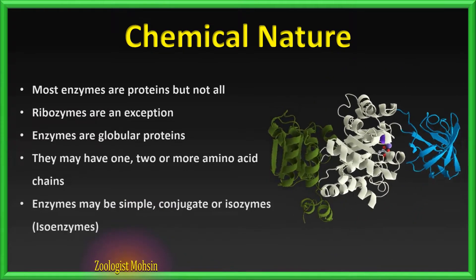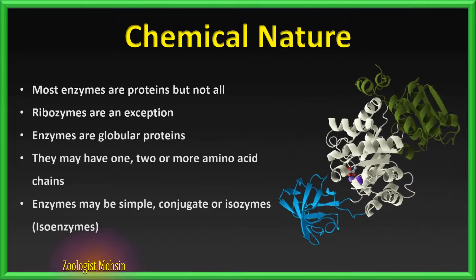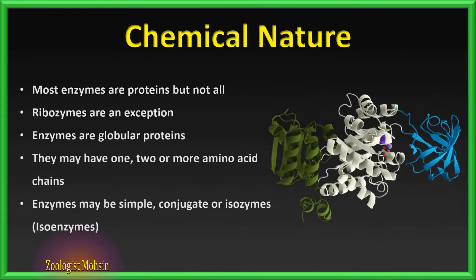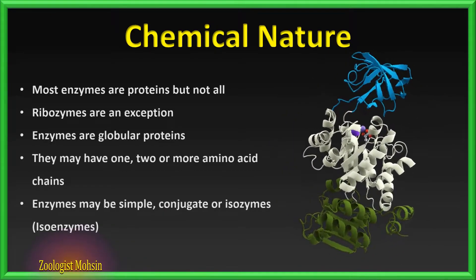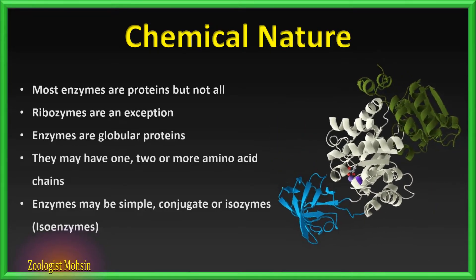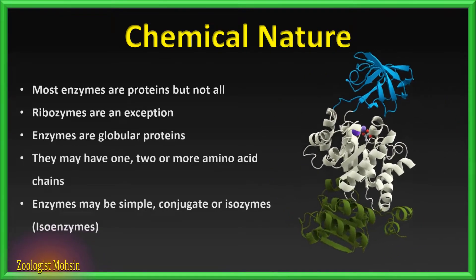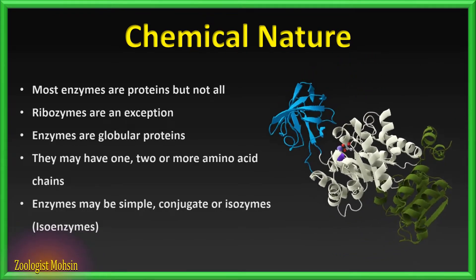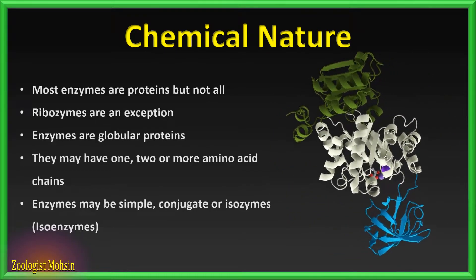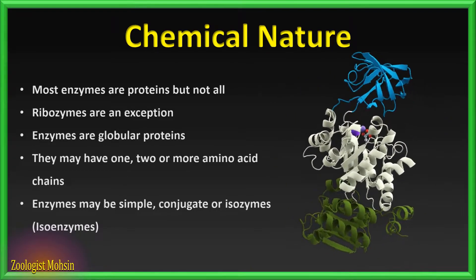Enzymes may be simple, conjugated, or isozymes (also called isoenzymes). Don't mix this term with ribozymes. Simple enzymes have amino acid chains only. Conjugate enzymes have combinations either with inorganic or organic parts.